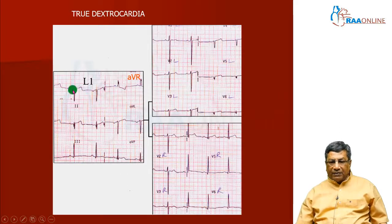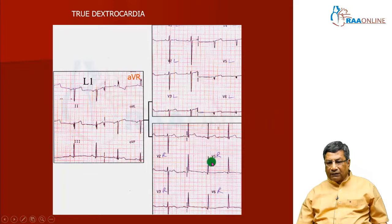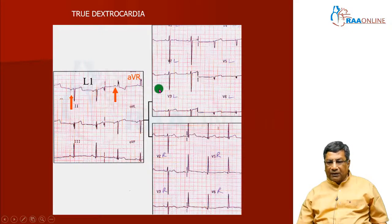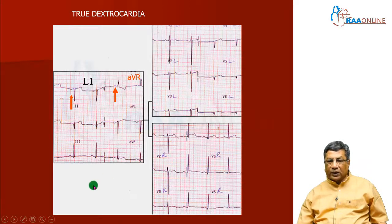You can see here the P wave is inverted in lead I and upright in AVR. Look at the chest leads — the left-sided chest leads have no QRS, whereas right-sided chest leads show progression of the R wave. That means the heart is on the right side, so this is true dextrocardia. When P wave is inverted in lead I and upright in AVR, look at the left-sided and right-sided leads. If the R wave is progressing in right-sided leads, it is true dextrocardia.